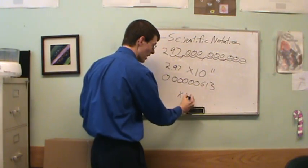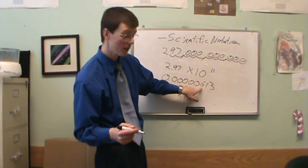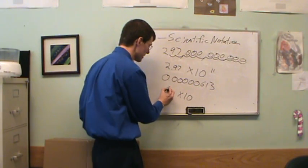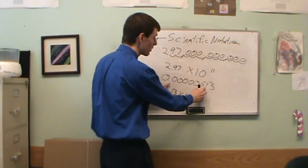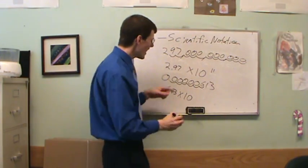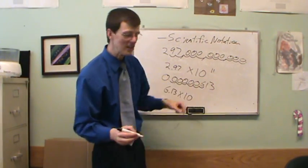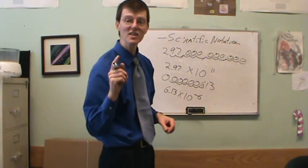I need to write it out as a number times 10 to the something. The number, since my first number here is a 6, well, so this is going to be 6.13, which means I need to move that decimal place all the way over next to the 6. So that's got to be 1, 2, 3, 4, 5, 6 places. And since I've moved it to the right, this is a really tiny number. This is 6.13 times 10 to the minus 6.